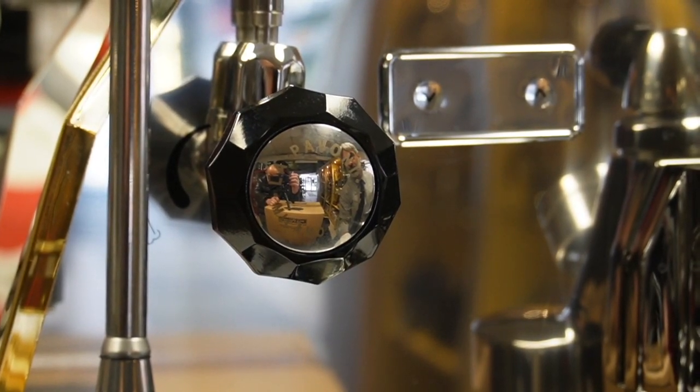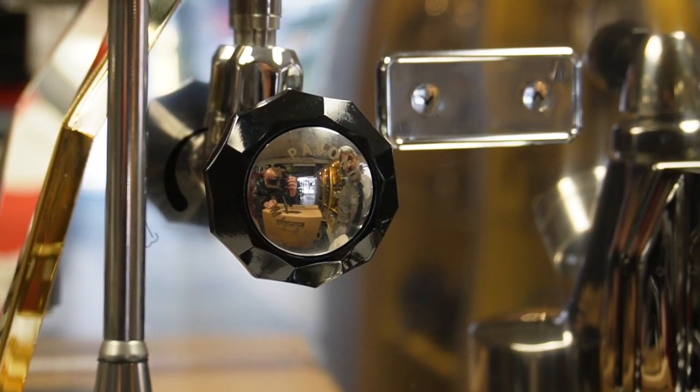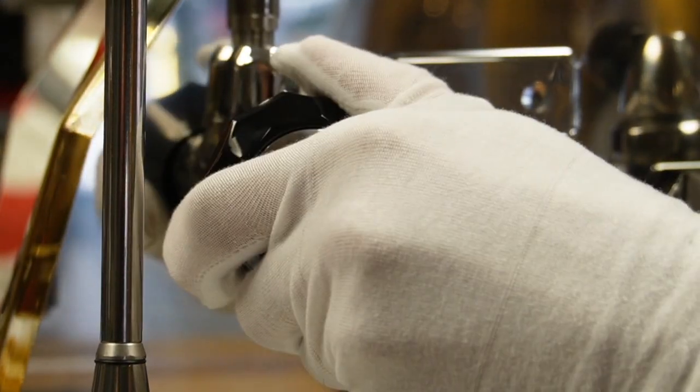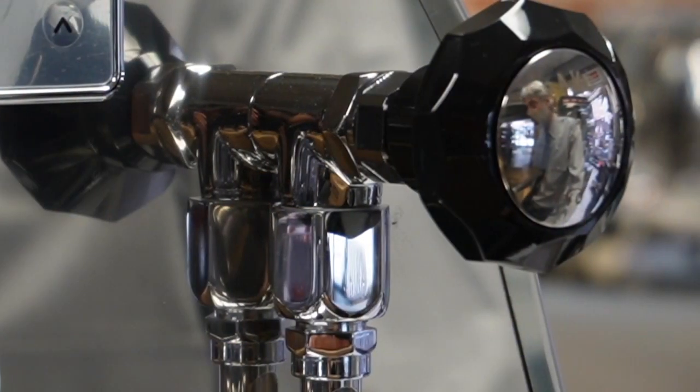Positioned on the left, the insulated steam wand remains cool to the touch, even after several minutes of frothing. The hot water spout is ideal for brewing tea or American-style coffee.